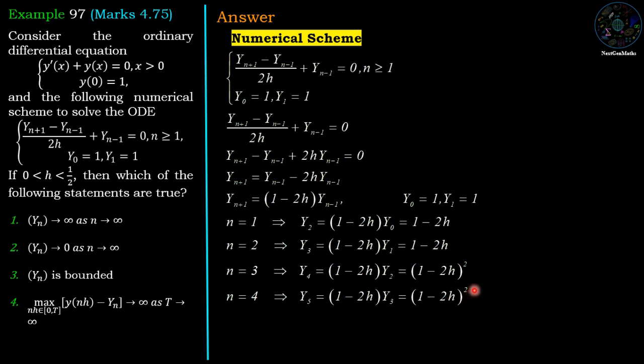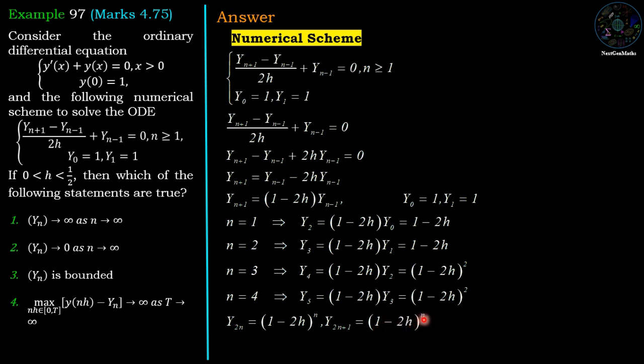Extending the pattern, we find that y_{2n} = (1 - 2h)^n and y_{2n+1} = (1 - 2h)^n.